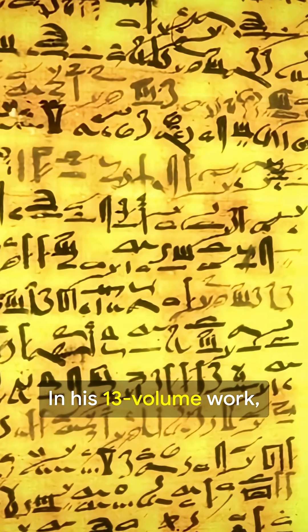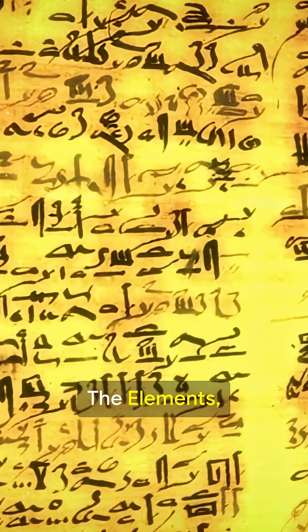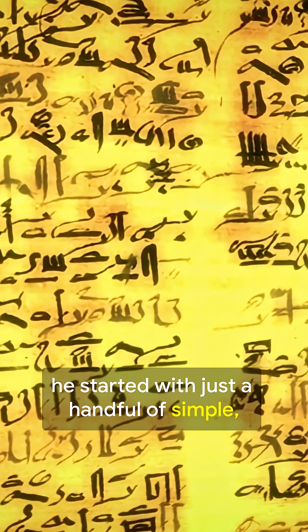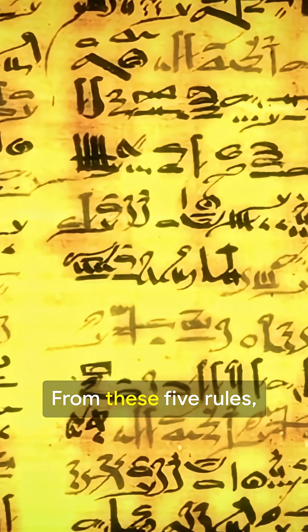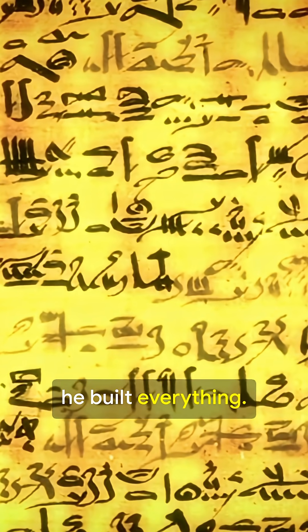In his 13-volume work, The Elements, he started with just a handful of simple, undeniable truths called axioms and postulates. From these five rules, he built everything.